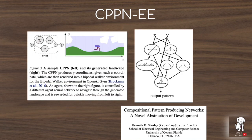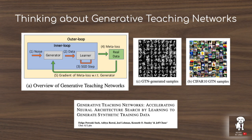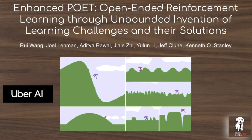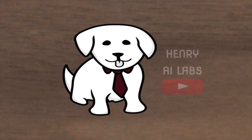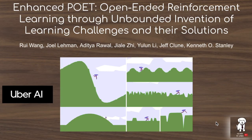Quality diversity algorithms embed the search for these stepping stones into the optimization loop, designing a co-evolutionary framework of learning the agents and the environments that they learn in, or the tasks that they're trying to learn. This describes a co-evolution between the learning agents and the environments they learn in, and it is one of the most exciting areas in artificial intelligence research.